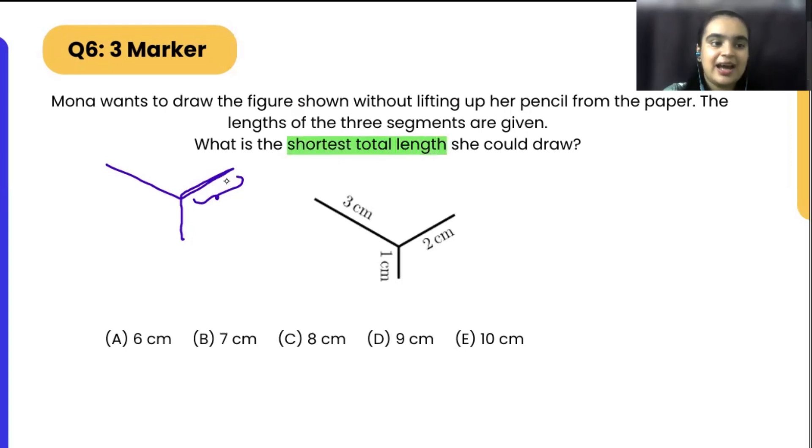That means our motive will be, if we are overlapping the segment, our motive is to overlap one centimeter. Why one centimeter? Because that is the smallest unit which they have provided us, right? If we are going to overlap two, two times, so it will be two plus two.